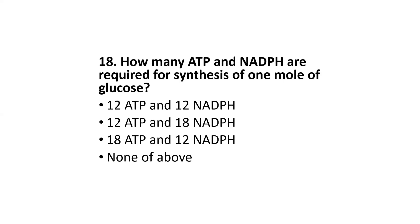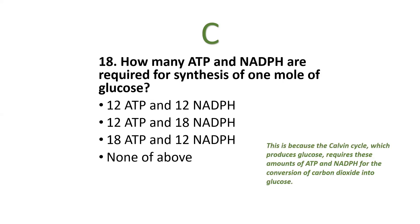Next: how many ATP and NADPH are required for synthesis of one mole of glucose — 12 ATP and 12 NADPH, 12 ATP and 18 NADPH, 18 ATP and 12 NADPH, or none of these? The correct option is C: 18 ATP and 12 NADPH. This is because the Calvin cycle requires these amounts of ATP and NADPH for the conversion of carbon dioxide into glucose.